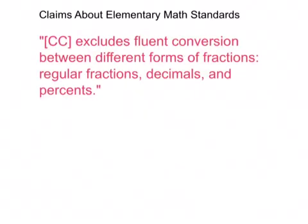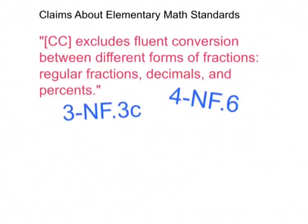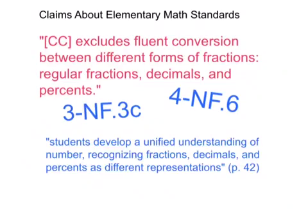Common Core excludes fluent conversion between different forms of fractions, regular fractions, decimals, and percents. Wrong again. Not only does it require conversion, but it also explicitly states that grade seven students develop a unified understanding of number, recognizing fractions, decimals, and percents as different representations.